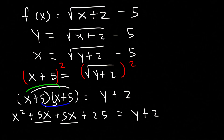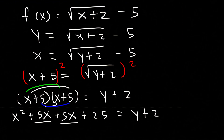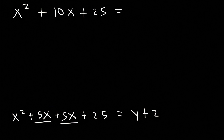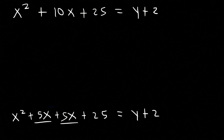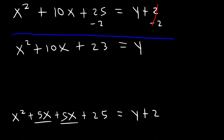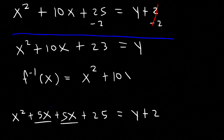Next, we need to combine like terms. 5x plus 5x, that's 10x. So we have x squared plus 10x plus 25, and that's equal to y plus 2. Now the last thing that we need to do is subtract both sides by 2. So we have x squared plus 10x, and 25 minus 2 is 23, so that's equal to y. Therefore, the inverse function is x squared plus 10x plus 23. So that's the answer.